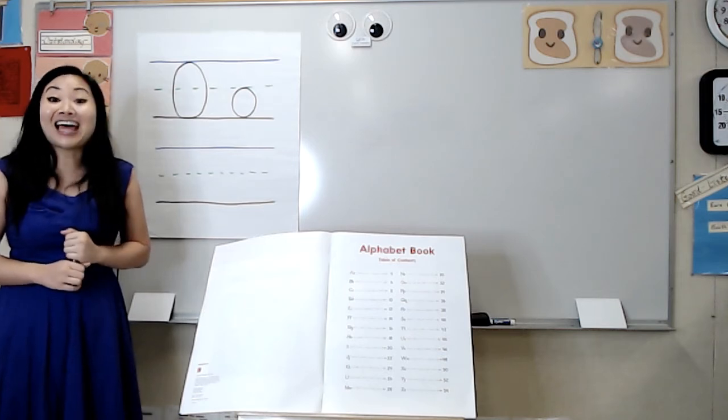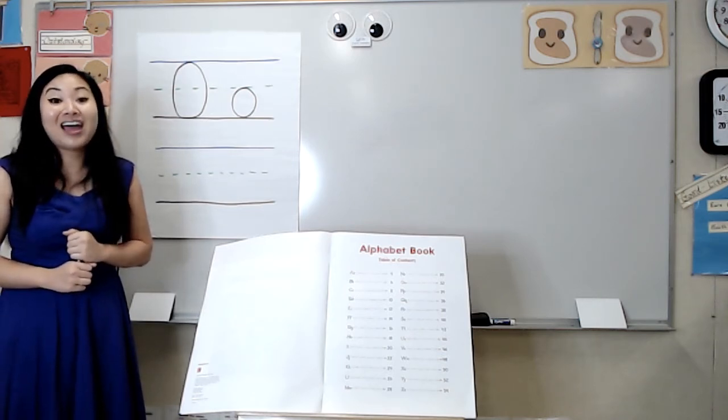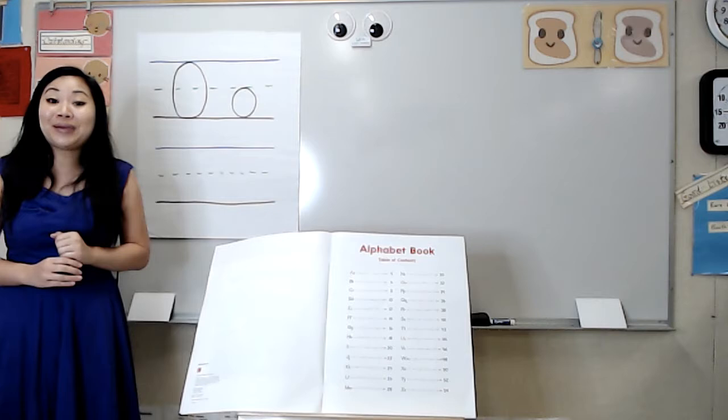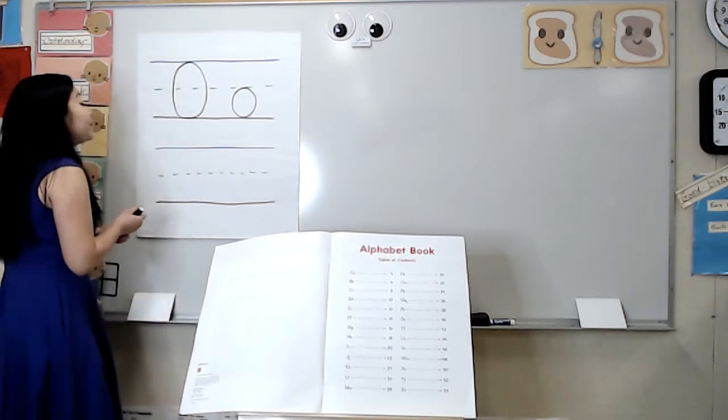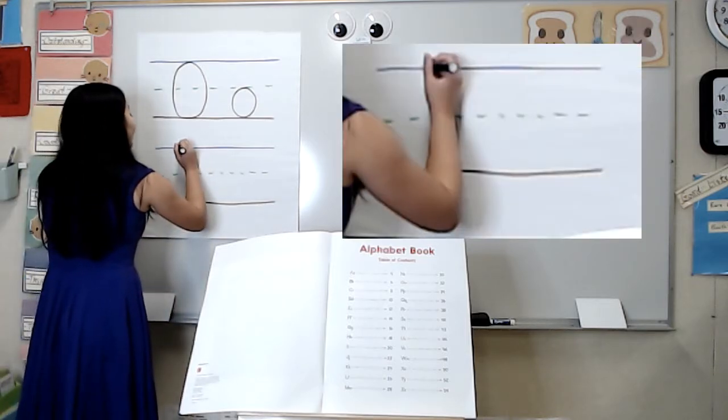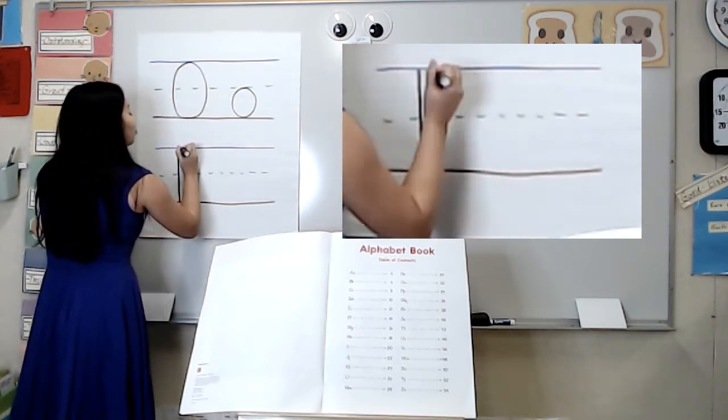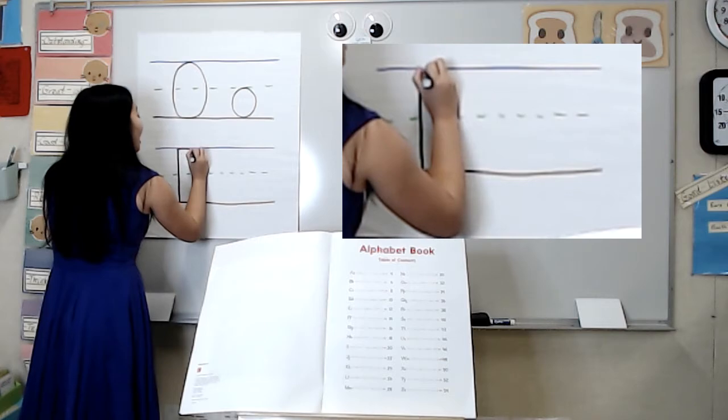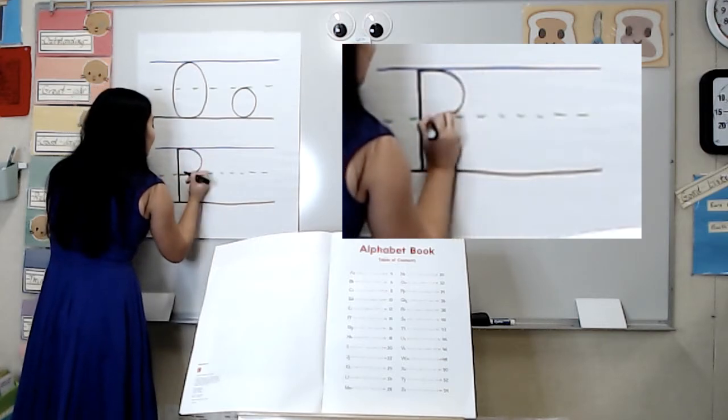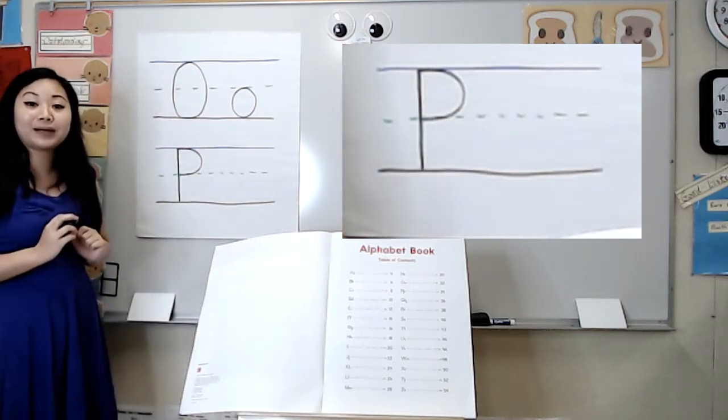All right friends, let's look at our next letter. I'm going to write the letter P. For the letter P, you start in the sky, touch the ground, back to the sky, and curve around. That is an uppercase P.